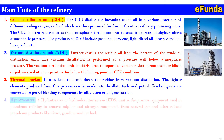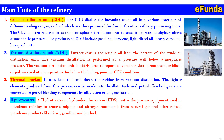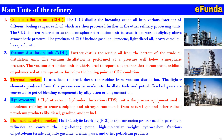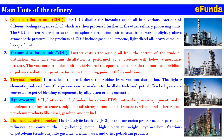Fourth, hydrotreaters — also known as Hydrodesulfurization or HDS units — are process equipment used in petroleum refining to remove sulfur and nitrogen compounds from natural gas and other refined petroleum products like diesel, gasoline, and jet fuel. Fifth, Fluidized Catalytic Cracking, or FCC: fluid catalytic cracking is a conversion process used in petroleum refineries to convert high-boiling-point, high-molecular-weight hydrocarbon fractions of crude oils into gasoline, olefinic gases, and other petroleum products.